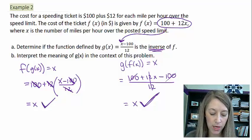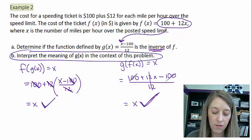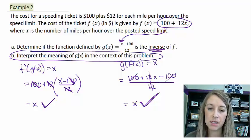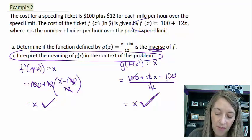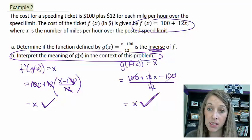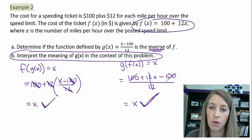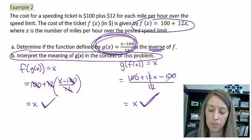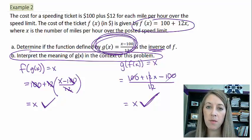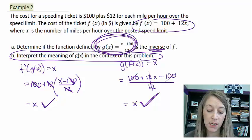Now the actual question here. Interpret the meaning of g of x in the context of this problem. So we know what f is. F is the cost of the speeding ticket, $100 plus $12 times the number of miles hour over. What does g actually mean in this problem? Well, we have to think about this, the inverse of each other.